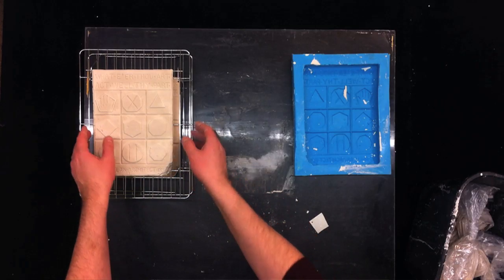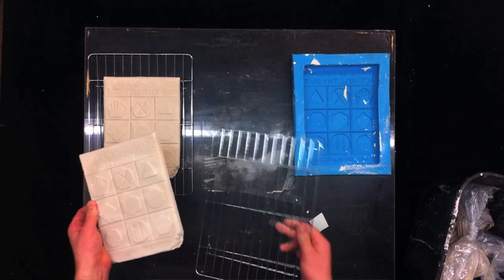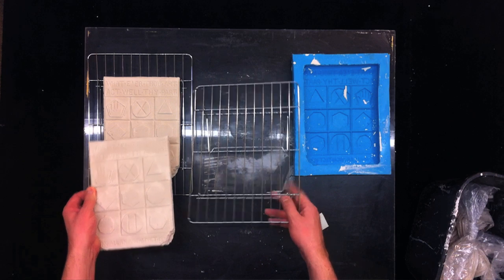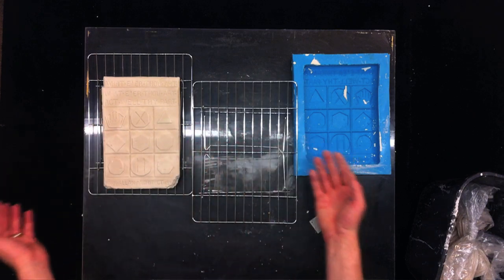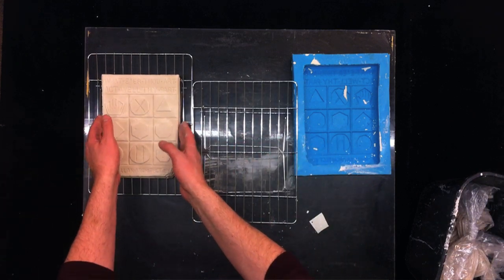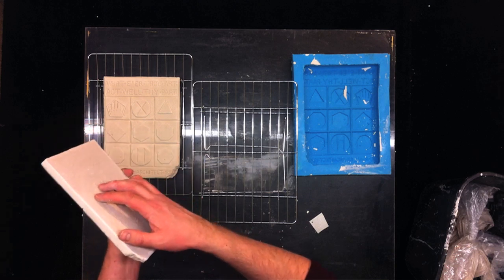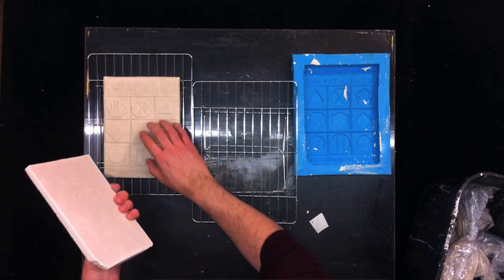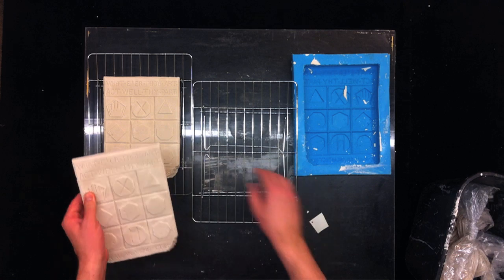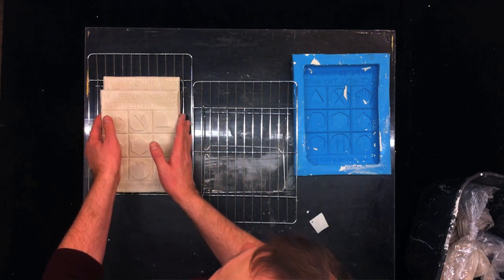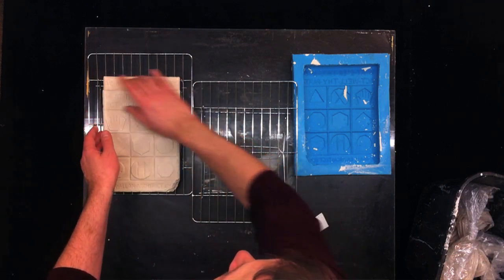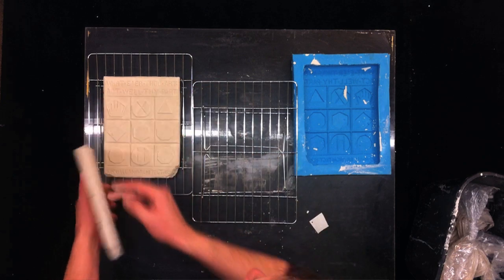And you want to make sure that when you're letting it dry that nothing is overlapping. Like for example, when I first started casting in hydrostone I would just stack the rocks like that or even like that, and what that does is the moisture transfers from one rock or sculpture to the other.